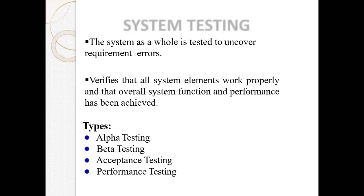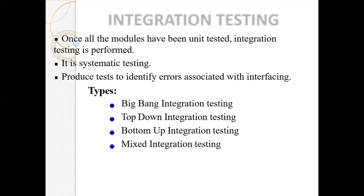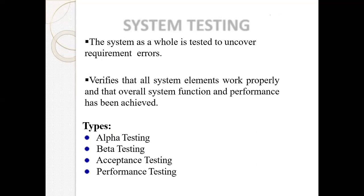System testing has types including alpha testing, beta testing, acceptance, and performance testing. Alpha testing means when a product is ready, the software quality assurance team tests it within the developing organization. Beta testing means after alpha testing is done, the software is released to a selected group of friendly customers — it is the initial release where feedback is collected. Then acceptance testing is done by the customer to determine whether to accept or reject the delivery.